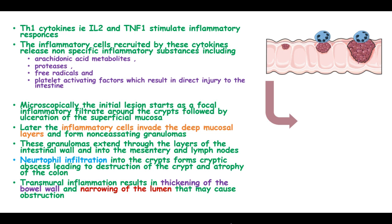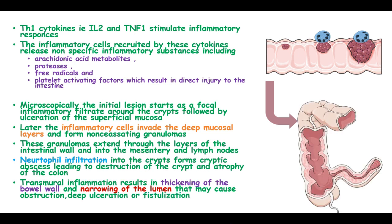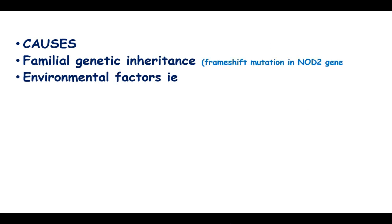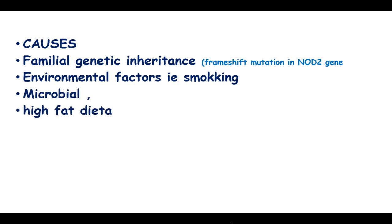Transmural inflammation results in thickening of the bowel wall, narrowing of the lumen, causing obstruction and fistulization. The causes of Crohn's disease include familial genetic inheritance via frameshift mutation of the NOD2 gene, environmental factors such as smoking, microbial factors, and high-fat diet, together with vascular factors.